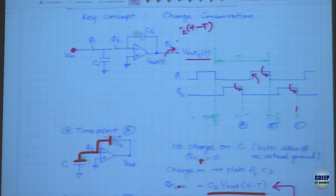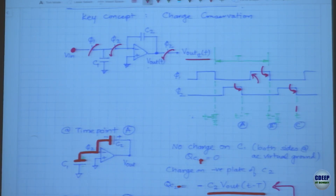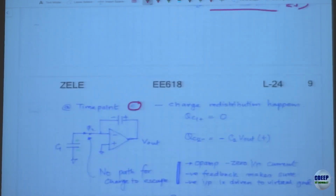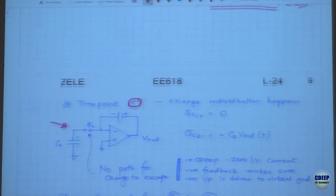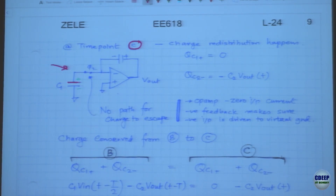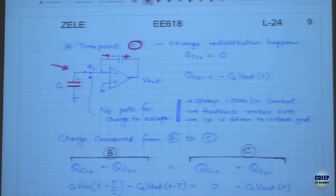At time point C, which is phi2, we open one switch, close the other. Whatever charge was stored on C1 before gets discharged because it has analog ground on both sides. That charge travels and deposits on C2, and as a result, this voltage Vout will change and the index will update to Vout2(T). We came from T minus T to the current value.